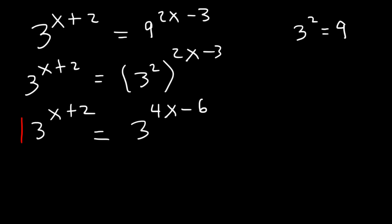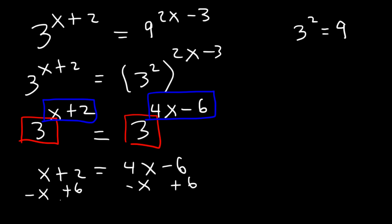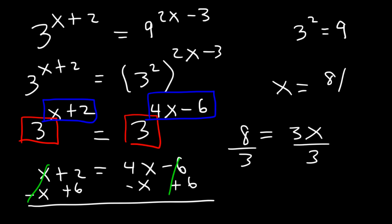Now, if the bases are the same, then the exponents must be equal to each other. Therefore, x plus 2 is equal to 4x minus 6. Let's subtract both sides by x and add 6 to both sides. These two will cancel. 2 plus 6 is 8, and 4x minus x is 3x. So x is equal to 8 over 3.